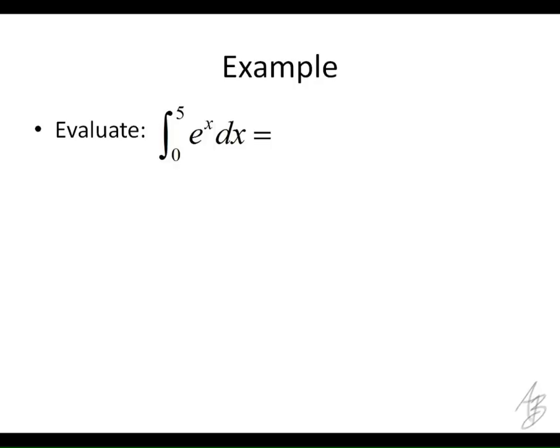This is another one that we did. This is actually a really easy one. Because the antiderivative of e to the x is e to the x. So we're going to evaluate e to the x at 5 and 0.